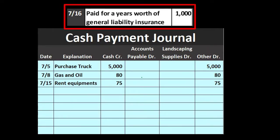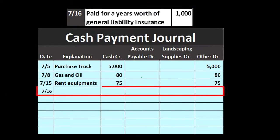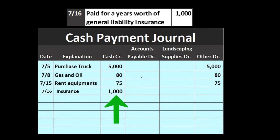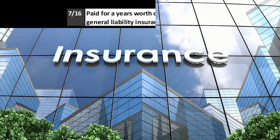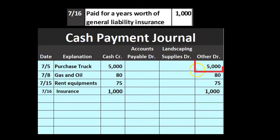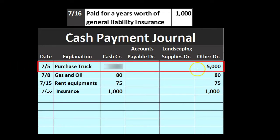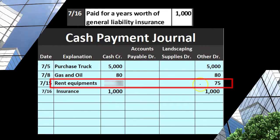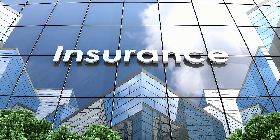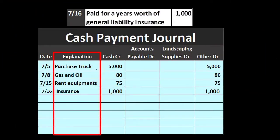On 7/16, paid for a year's worth of general liability insurance, $1,000. We write 'insurance' for the explanation, cash goes down by $1,000 as always in the cash payment journal, and the other side goes to 'other' — specifically prepaid insurance. Notice we're listing out the other account in the description. For the truck purchase the other account is auto (a fixed asset); for gas and oil it's auto expense; for equipment rental it's rental expense; for insurance it's prepaid insurance since we paid before consuming the coverage. The description helps us identify which accounts to post to.